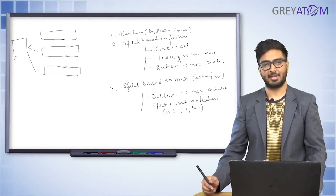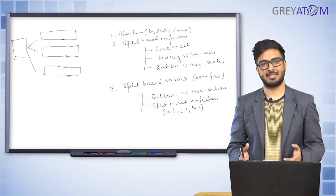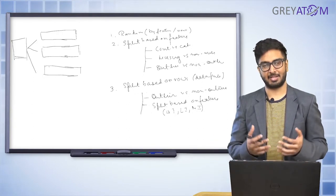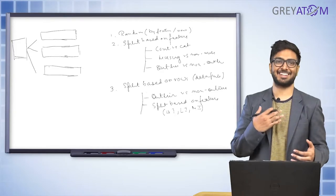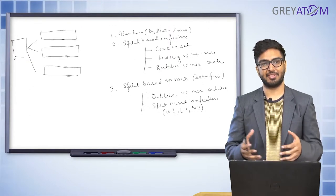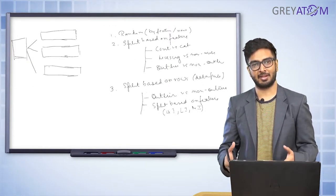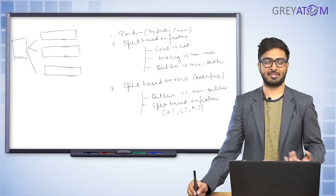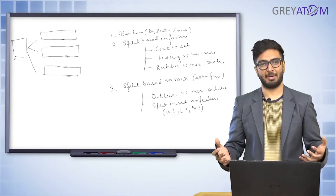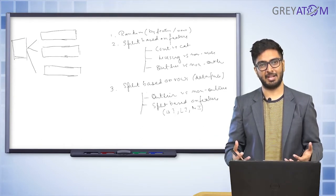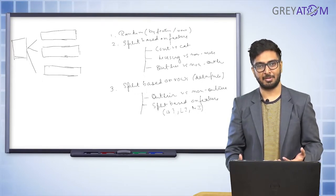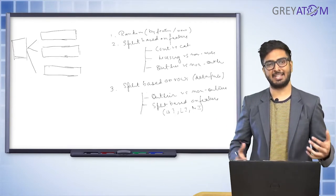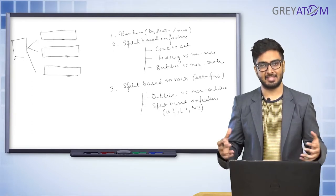You can also split based on time — for example, age groups like under 30, 30 to 60. This exact technique is called stratified sampling, where data comes from different strata: high income, low income, middle income, or different time periods. Geographical features are another option — housing data from different parts of a city can be split into regions, with separate models built for each region.